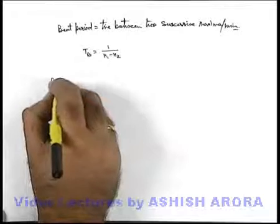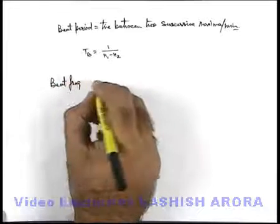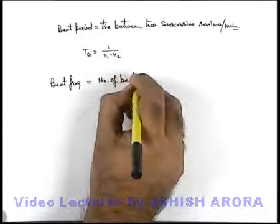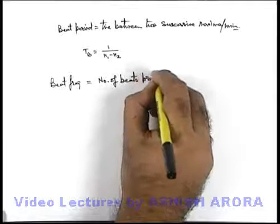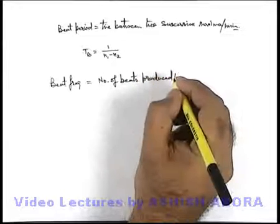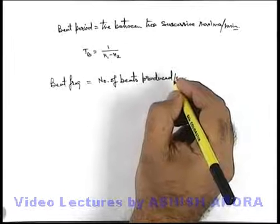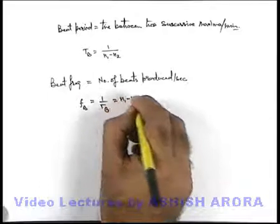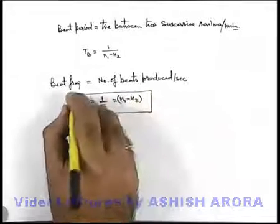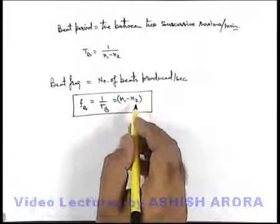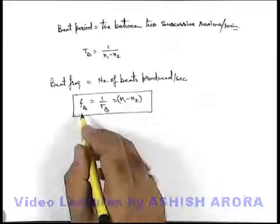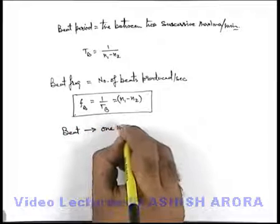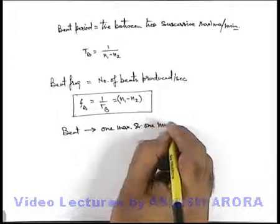Now if we talk about beat frequency, beat frequency can be written as the frequency at which the amplitude is varying, or it can be written as the number of beats produced per second. For number of beats produced per second, this can be written as n1 minus n2 — it is the frequency difference of the two superposing waves. This is the rate at which the beats are being produced. A beat is composed of one maxima and one minima — this we term as one beat.